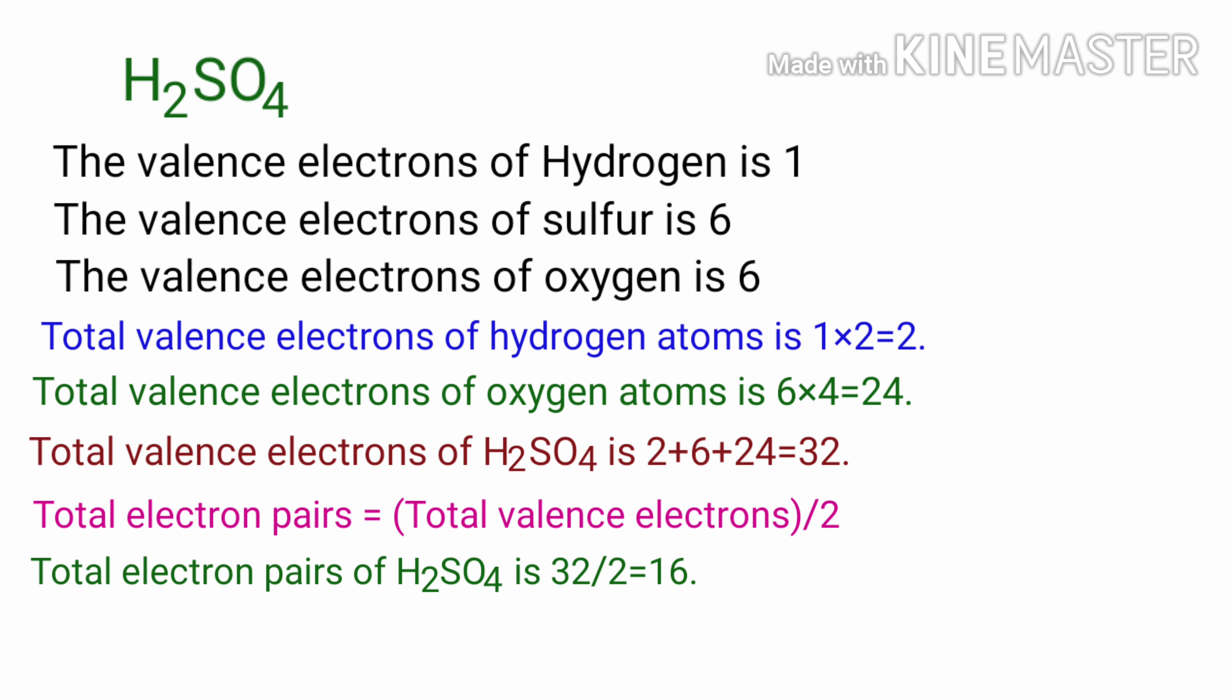To be the central atom ability of having greater valence is important. For H2SO4 molecule, sulfur has the highest valence than oxygen and hydrogen. Now we can draw a structure of H2SO4.